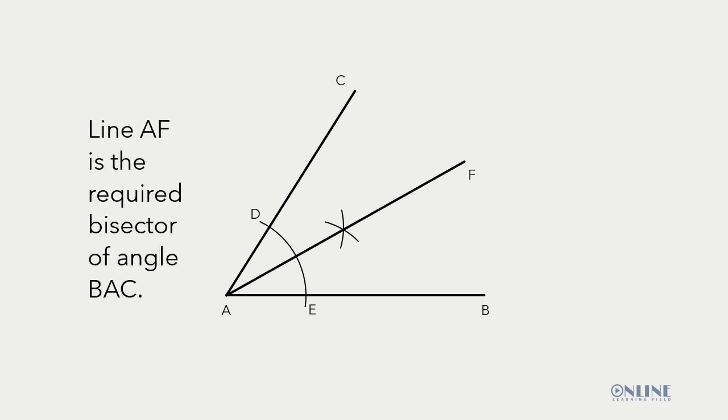So finally, we can see that line AF is the required bisector of angle BAC. So line AF is the bisector dividing angle BAC into two equal parts.